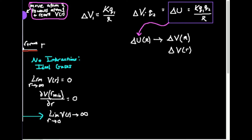The voltage of some charged species one is given by Coulomb's constant times charge one divided by the distance between charge one and whatever the second charged species is. If I take that voltage of charge one and multiply times charge two, this ultimately becomes the potential energy between charges one and two.